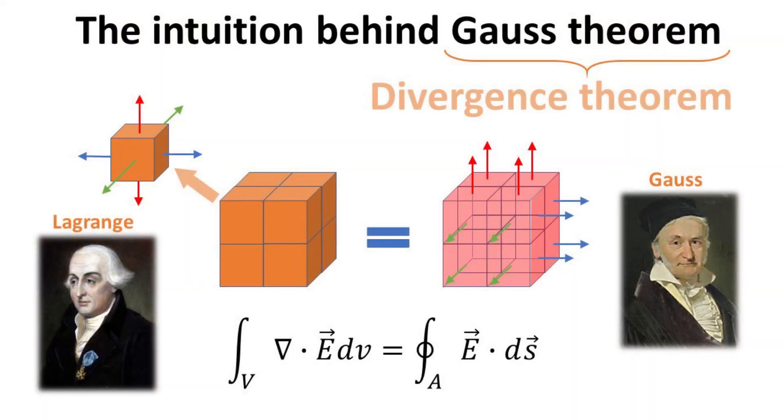The Divergence Theorem, also known as the Gauss Theorem, is a mathematical result widely used in physics and engineering.